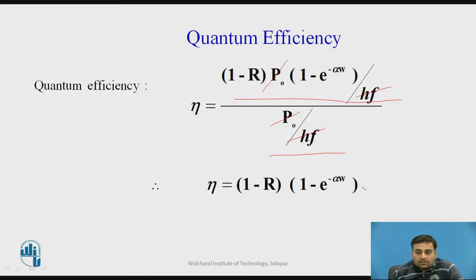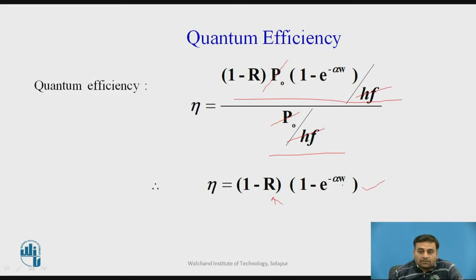From this equation, it is clear that to increase quantum efficiency, we need to reduce the value of R (Fresnel's reflection coefficient), or have a higher absorption coefficient alpha, or increase the width W available for photon absorption. Quantum efficiency is sometimes specified as a percentage — 75% means 75 out of 100 incident photons are absorbed for generation of photocurrent. Also, quantum efficiency and absorption coefficient alpha are specified at a specific wavelength.